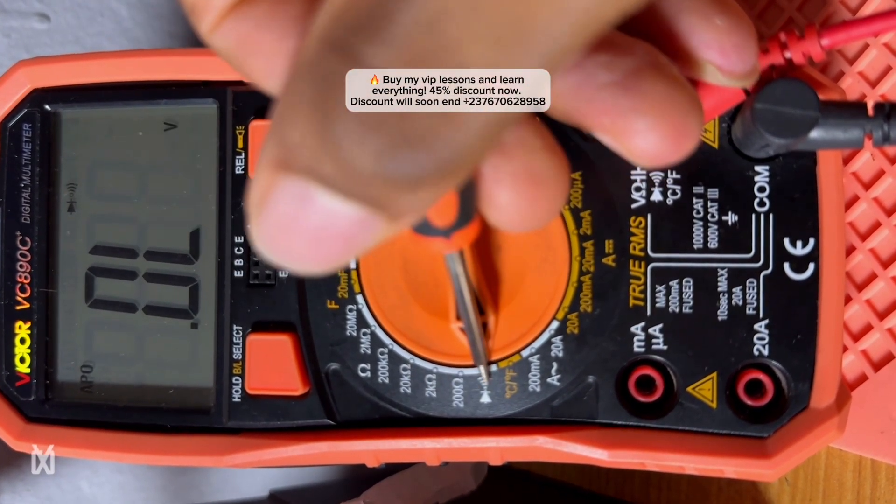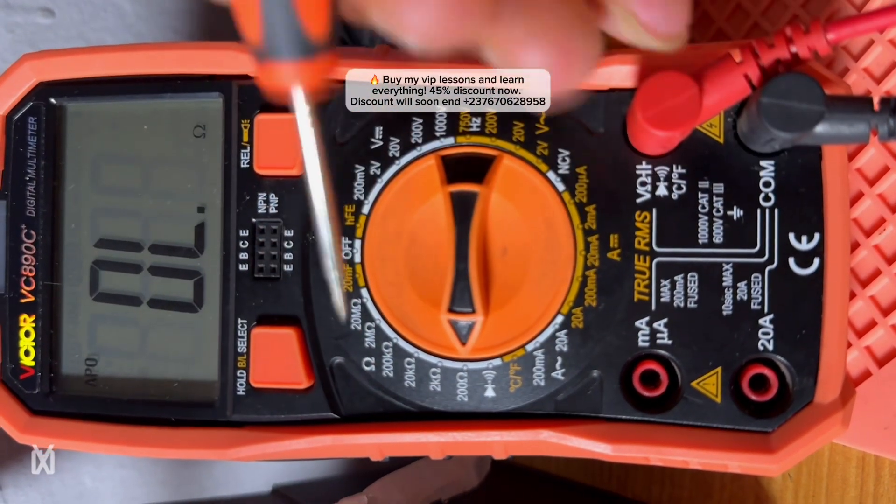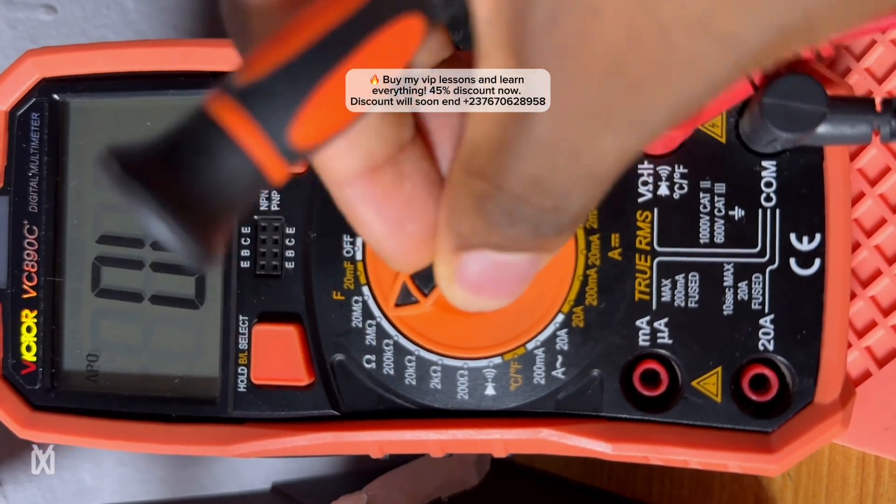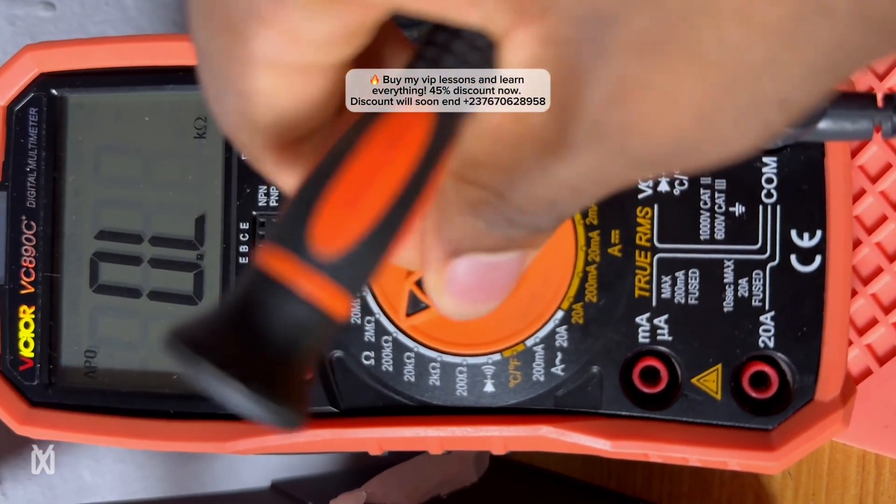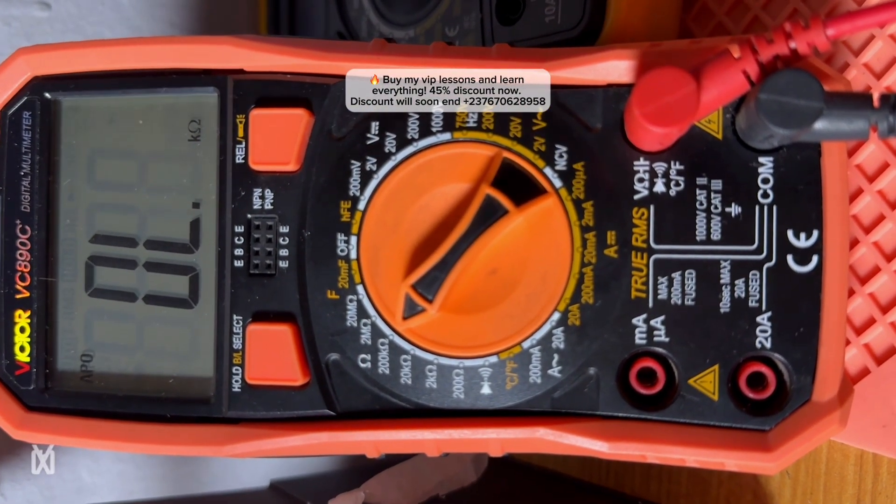So this continuity test mode has to test low value resistors, which is similar to this one right here. Any resistor above this, especially when the resistor is mega ohm, if you test it even here it's not going to give a reading. And maybe you'll think that there is an open circuit in the resistor, then you go on and change it while everything is working well.